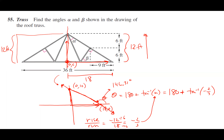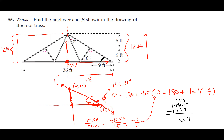But I'm not looking for that angle — I'm looking for the angle here. So I'm going to subtract that from 180. So 180 minus 146.31 — with some borrowing — gives me 33.69 degrees. So the angle measurement here is 33.69 degrees.